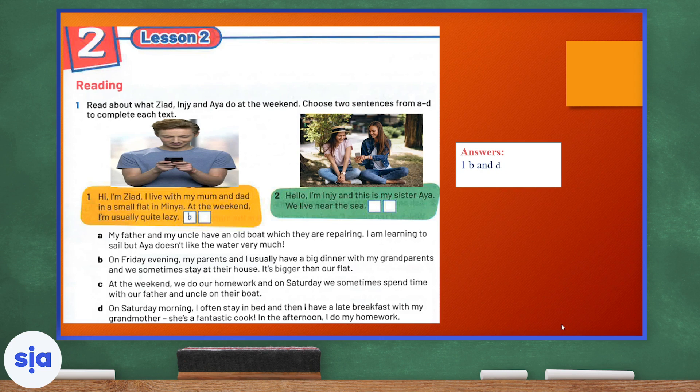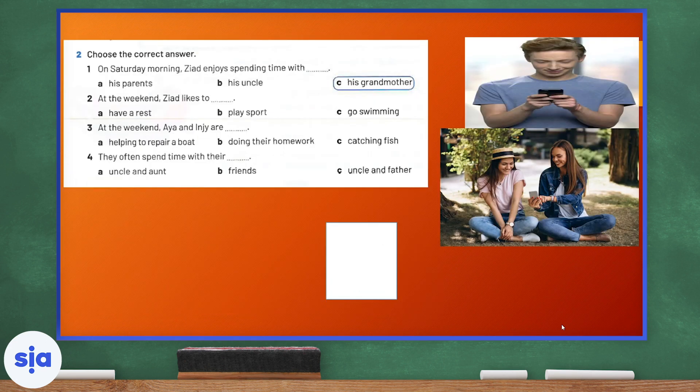Of course, we match number one for Zied with B and D. B specifically talks about Friday evening and what Zied does with his family and where he has a big dinner and sometimes they stay at their grandparents' house. And of course, the hint and keyword is that the house they go to is bigger than their own house. Now, we will move on to Inji and Aya. Inji and Aya can match with A and C.